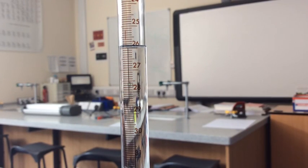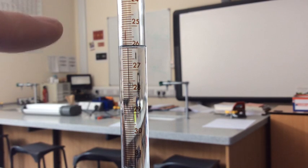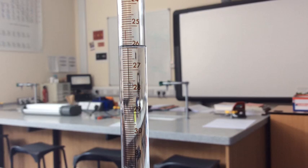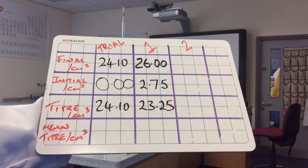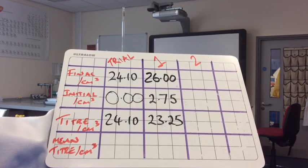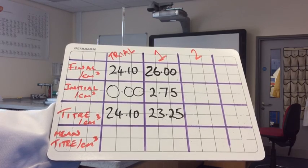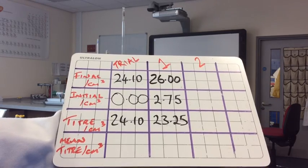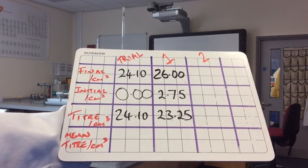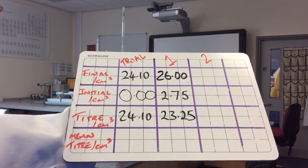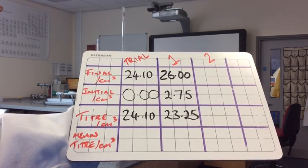So you can see there the meniscus is exactly on the 26 mark there. So we can safely say that that burette reading is 26.00. So there's the results table with the new information on. And you can see that the titra for the first accurate experiment is coming out at 23.25. So what I'm going to do now is do another accurate experiment and we'll get, hopefully, exactly the same titra. But we need to be within 0.10 of that, ideally.